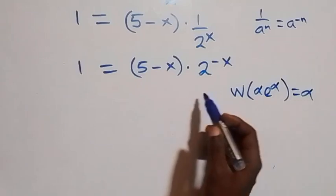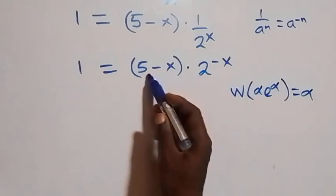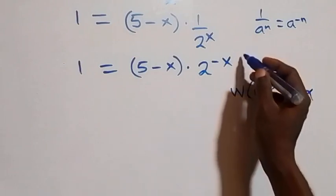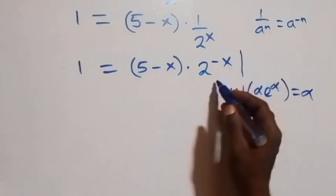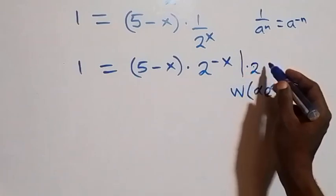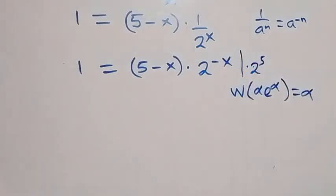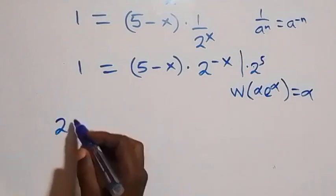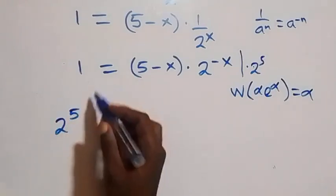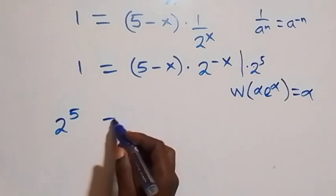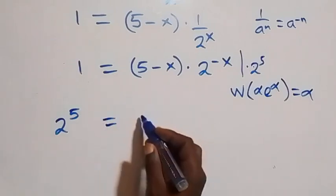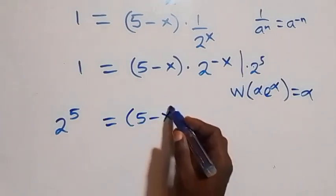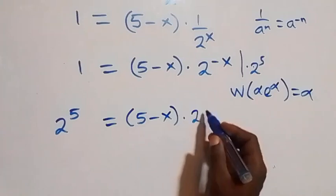Here, in order to have 5 minus x as both the power and the coefficient, we can multiply through by 2 raised to power 5, such that this side becomes 2 raised to power 5 times 1, which is 2 raised to power 5.